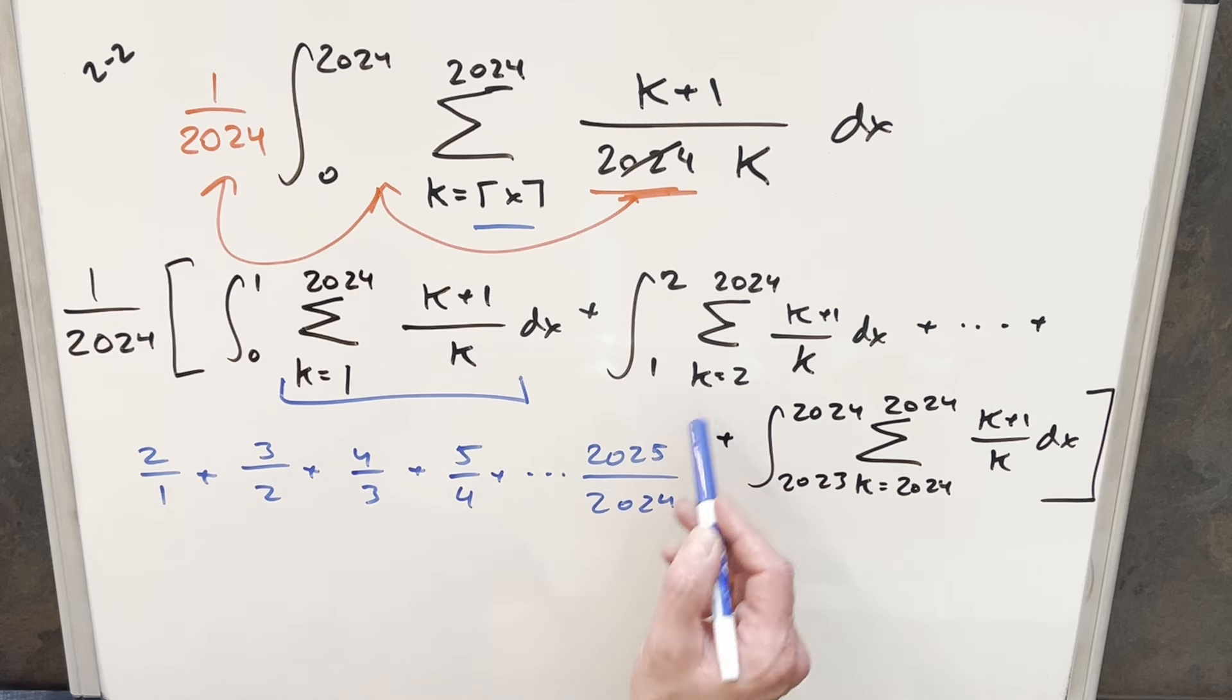But the nice thing about this is each sum is so similar. Like for this one, it's really just the same thing, but we're just starting from the second term. Like the first term here, when k is two, for this sum here, it's going to be three halves. And then when k is three, it's four thirds. So this is all going to be identical, just starting at a different point.